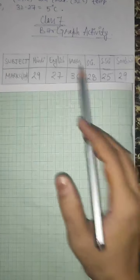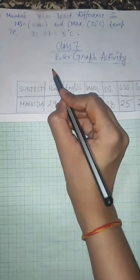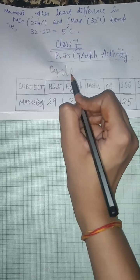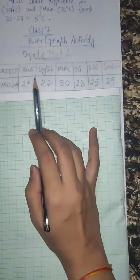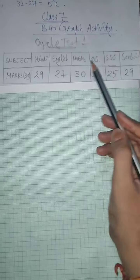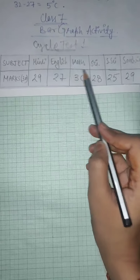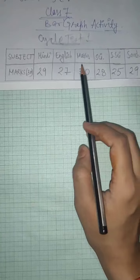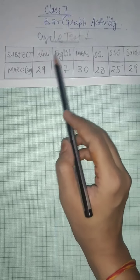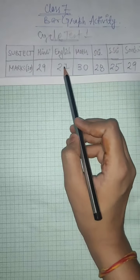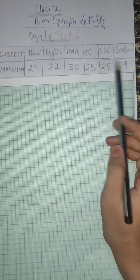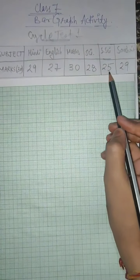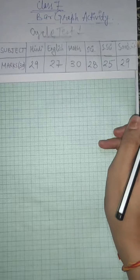So this is my table of cycle test 1. This is my table of cycle test 1. Hindi is 29, English 27, then Maths is 30, Social Science is 28, and Sanskrit 25.